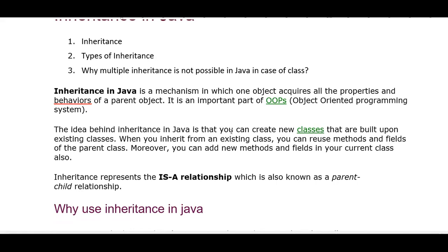So how can we access the concept of inheritance? Inheritance means a parent-child relationship. The idea behind inheritance in Java is that you can create new classes that are built upon existing classes. When you inherit from an existing class, you can reuse methods and fields of the parent class. Moreover, you can add new methods and fields in your current class. The main concept here is code reuse.